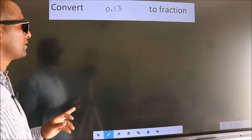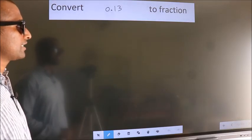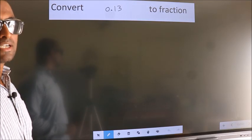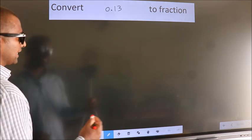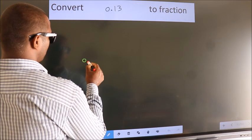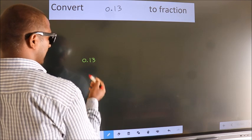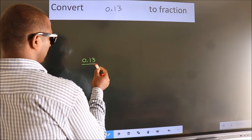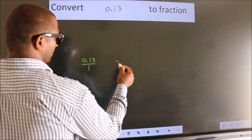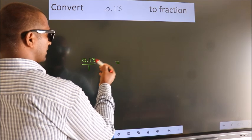Convert 0.13 to a fraction. Given is 0.13. We take it as 0.13 by 1. This should be converted to a fraction.